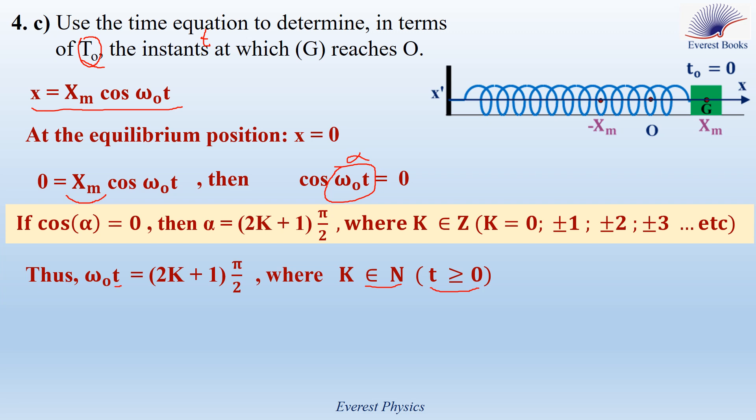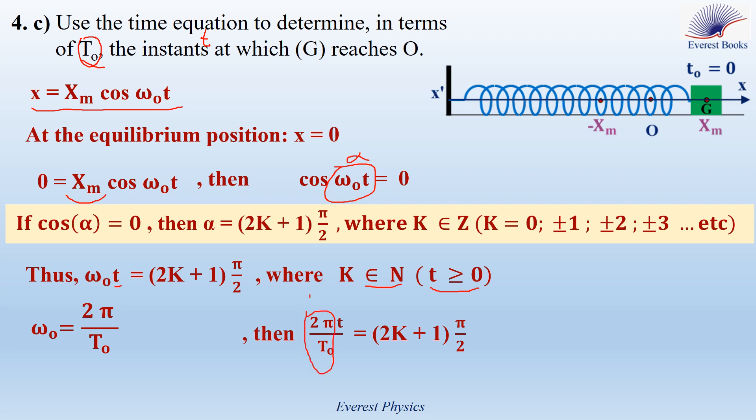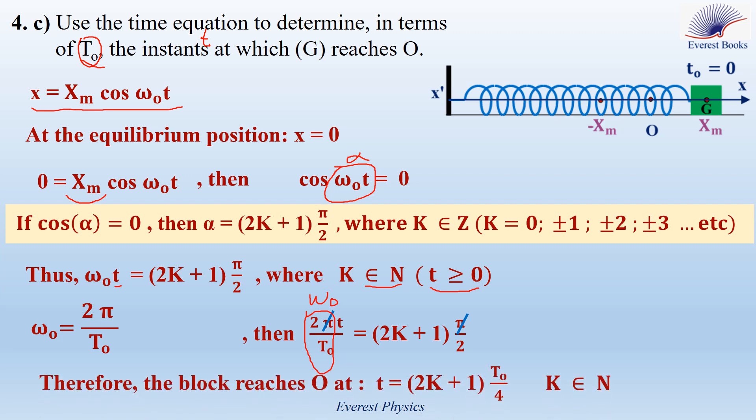Replacing ω₀ by 2π/T₀ and solving, we get t equals (2k+1)T₀/4, where k belongs to ℕ. For the first instance, substitute k equals 0: t equals T₀/4. For the second instance, substitute k equals 1: t equals 3T₀/4, and so on.